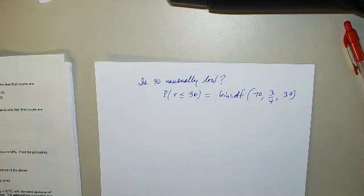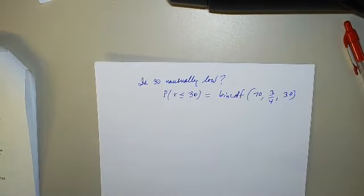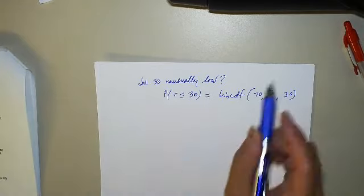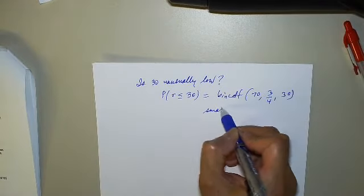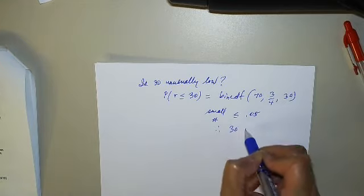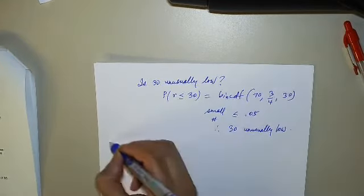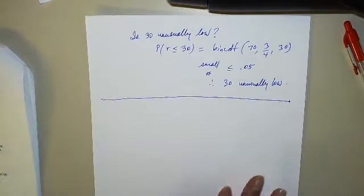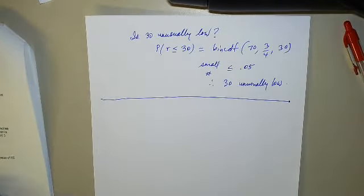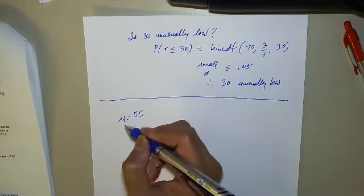30 unusually low. So I want the probability R less than or equal to 30, which is binomial CDF, n, p, 30. What do we get? Really small, like less than 0.05.